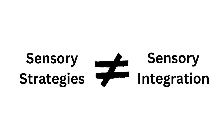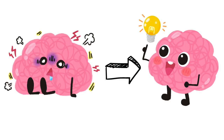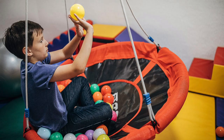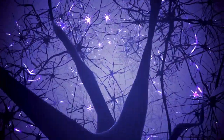ASI, or sensory integration, is a structured therapy approach that uses play-based activities to challenge a child's sensory processing skills in hopes of improving the brain's ability to process and respond to sensory information. While not technically mandatory, many therapists who deliver Ayres Sensory Integration have specific training and certification in this area. ASI takes place in a specialized clinic with tons of sensory tools at the therapist's disposal. In short, the goal with ASI is big — it's literally to rewire a student's brain so they can better respond to their environment.